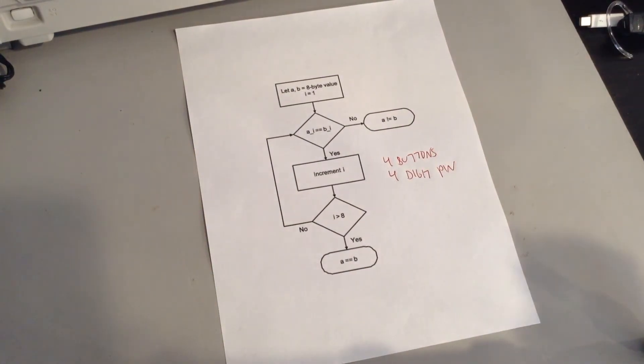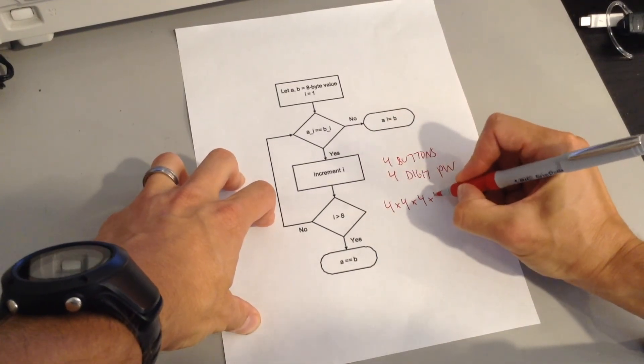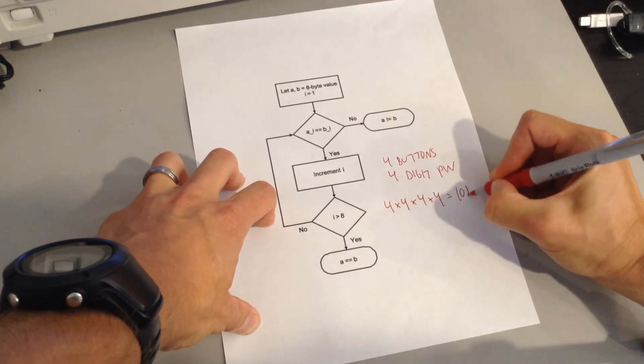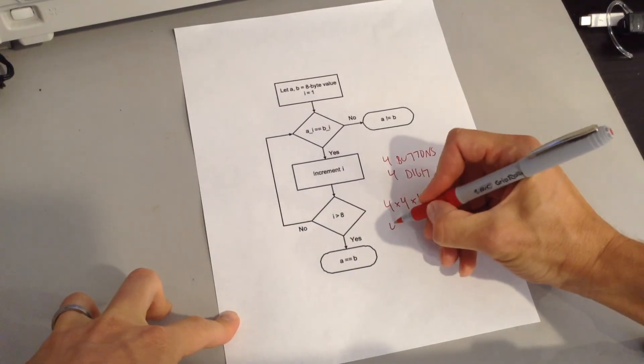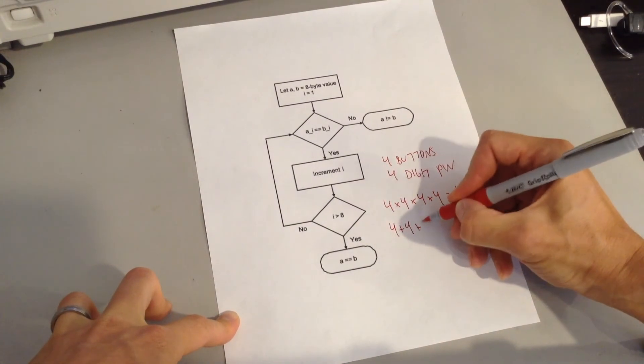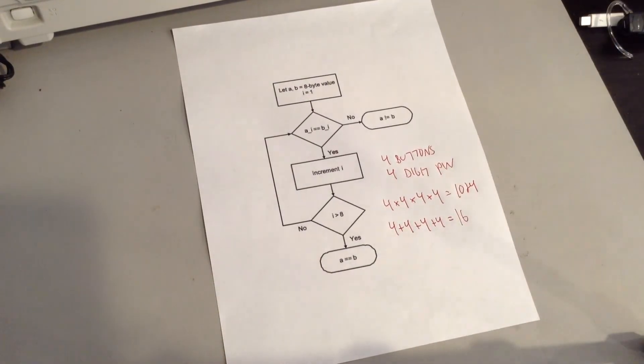In a normal situation, we would have four times four times four times four equals 1,024 possible combinations for the pin. With the timing attack, if we're able to identify which is the correct byte along the way, we would try the first byte, make sure we guess that one properly before we move to the second byte, to the third byte, to the fourth byte. Then we can actually do four plus four plus four plus four, which is 16 possible combinations.